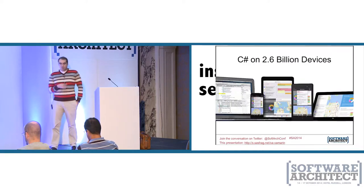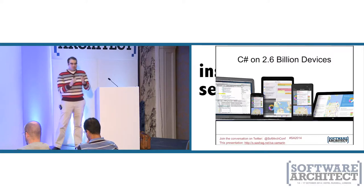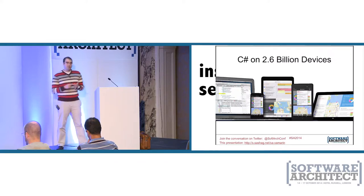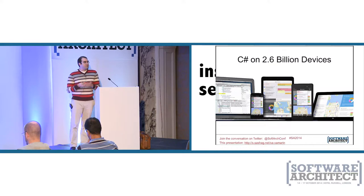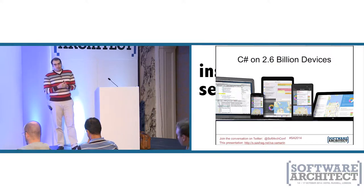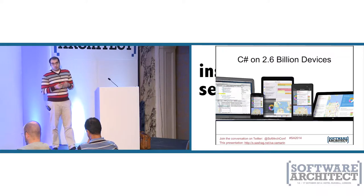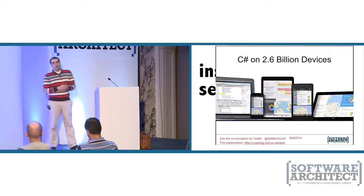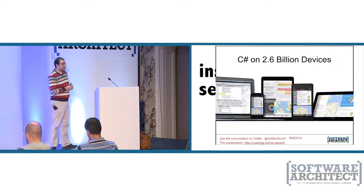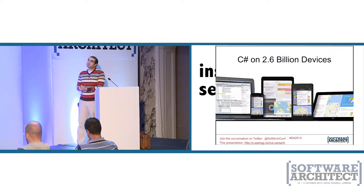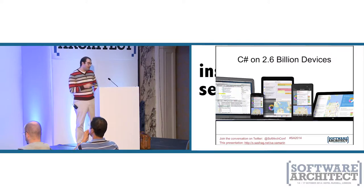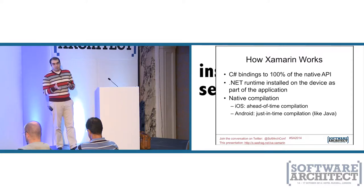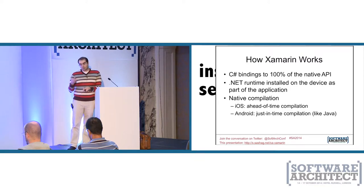With Xamarin you can bring your C Sharp code to roughly 2.6 billion devices — iPhones, Android phones, Windows phones, Windows PCs, and Macs. You can also use Xamarin to build native OS X applications as well as iOS apps, sharing lots of logic between the platforms. Let's talk a little about how Xamarin works before we get to a demo where I build a simple Android application.